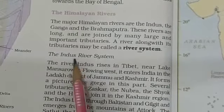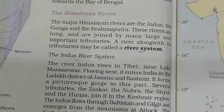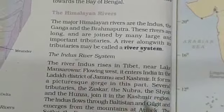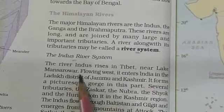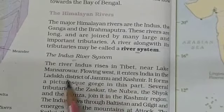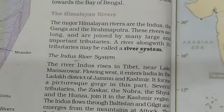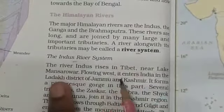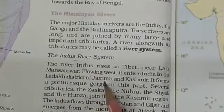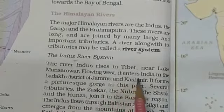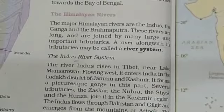Let's read about the Indus river system. The river Indus rises in Tibet, near Lake Mansarovar. Flowing west, it enters India in the Ladakh district of Jammu and Kashmir.